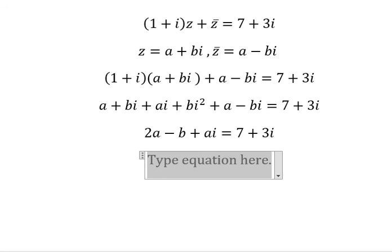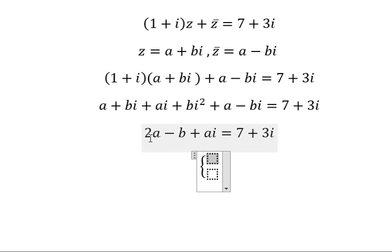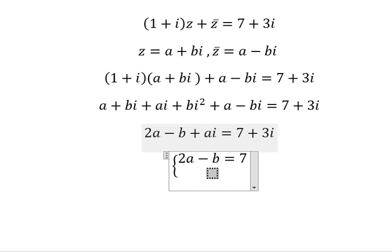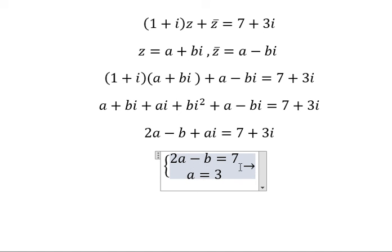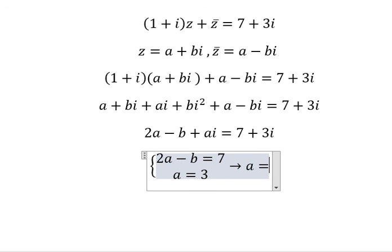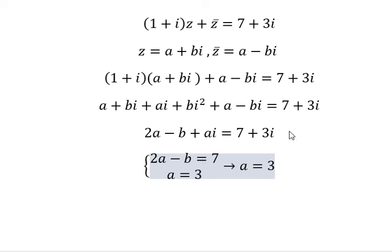In this situation we can create a system of equations. For the real part, 2a minus b equals 7, and a equals 3. We calculate and get a equals 3 and b equals negative 1.